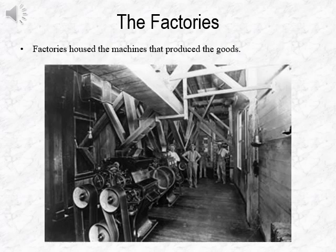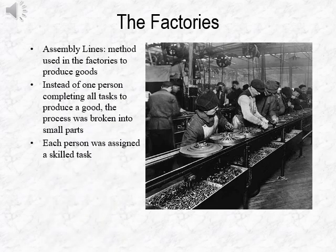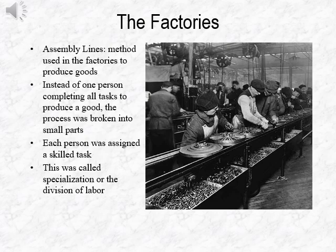This image shows various factories. Factories housed the machines that produced the goods manufactured during the Industrial Revolution. Factories made use of assembly lines — the method used in factories to produce goods faster. Instead of one person completing all tasks to produce a good, the process was broken into small parts. Each person was assigned a skilled task. This was called specialization, or the division of labor.